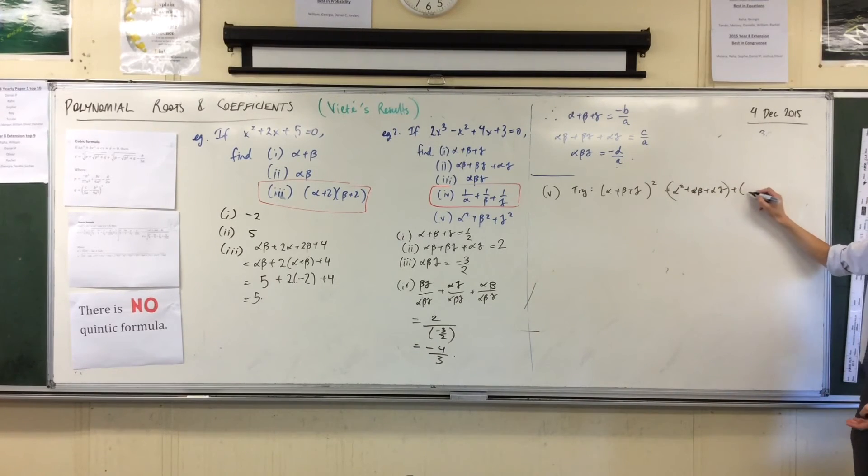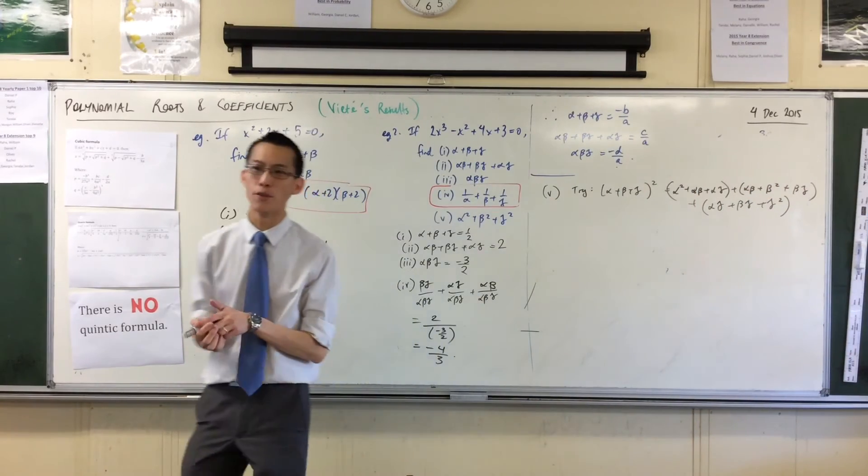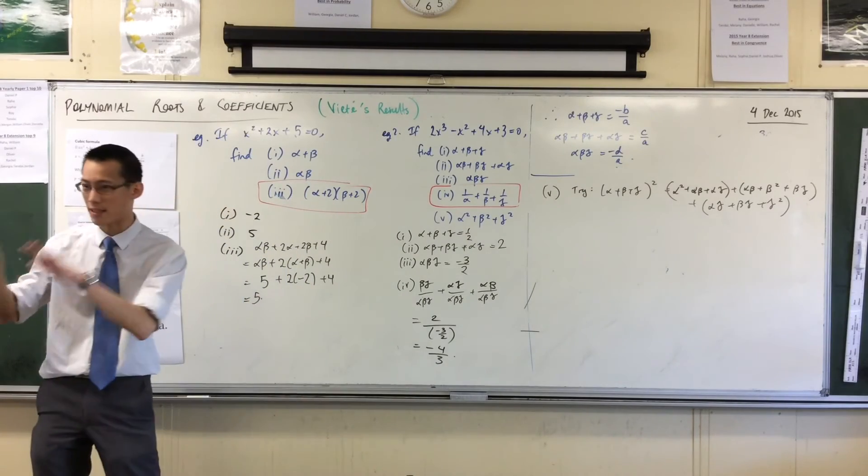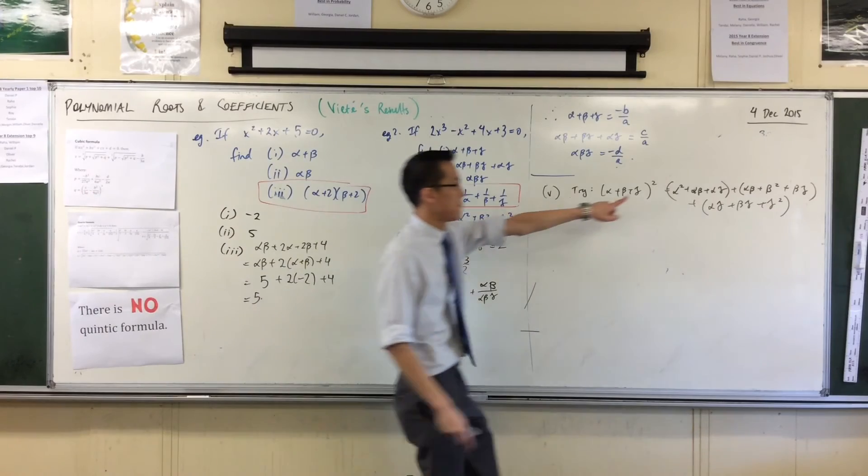Put it in brackets. I'll do the second one, which will give me alpha beta plus beta squared plus beta gamma. You see, I multiply everything by beta. And then my last one, which will be alpha gamma plus beta gamma plus gamma squared. Excellent. So I've done the brackets there just so I don't get overwhelmed by how many terms I've got, so I can see there's a pattern. It's three threes.